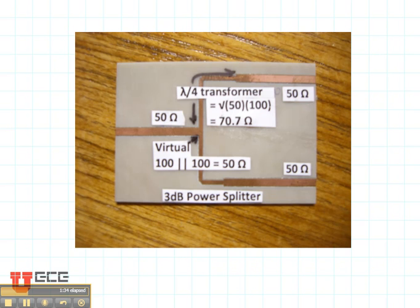Now here's a microstrip power splitter. It's a 3 dB power splitter, meaning that half of the power comes out on either side. Here's my input. Right there I'm putting all of my power in, and I'd like to have half of my power out on this side, and half out on this other side.